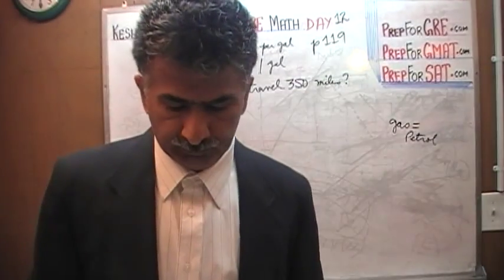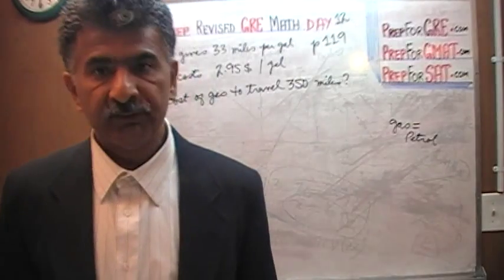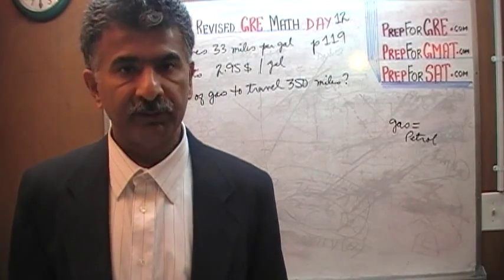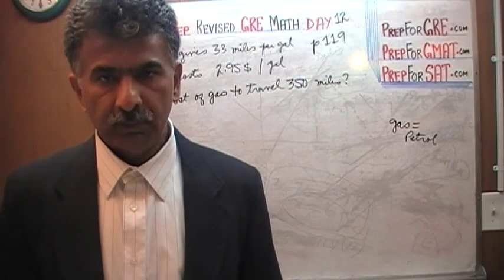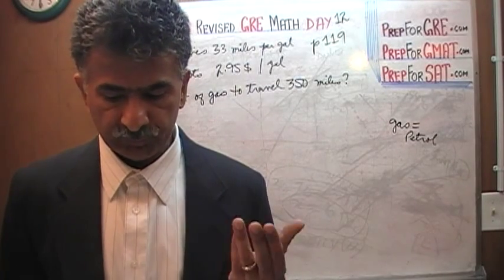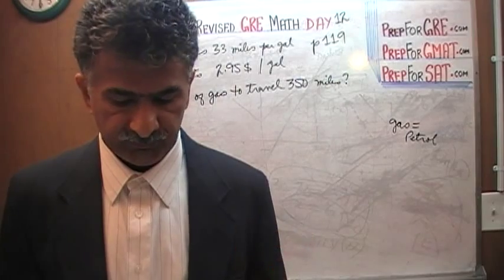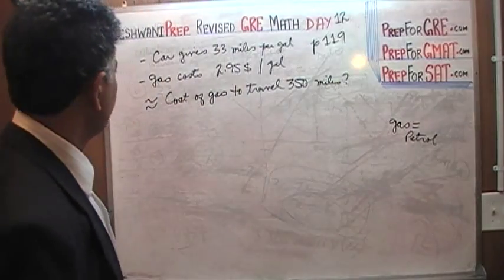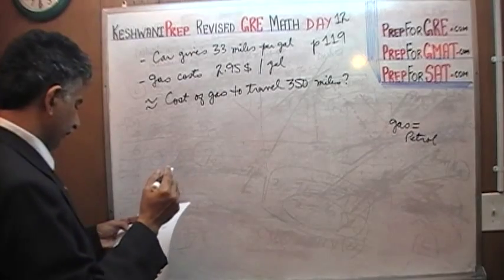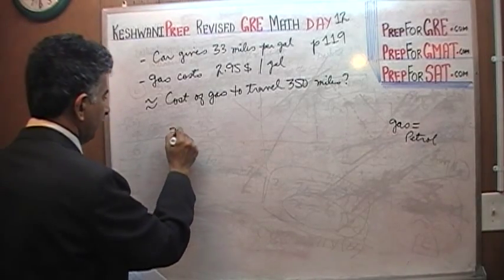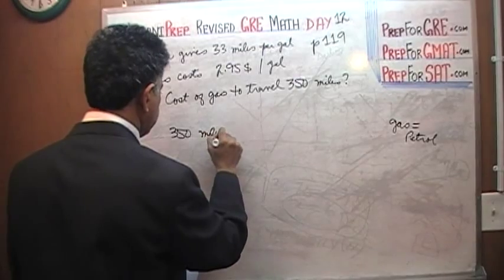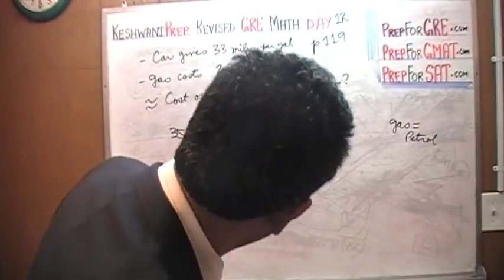So, we have a car that gives us 33 miles per gallon and we are told that a gallon of gasoline costs $2.95. The question simply is how much will it cost to travel 350 miles. It is very simple — it is 33 miles per gallon, and we are going 350 miles.